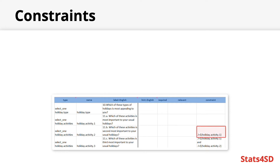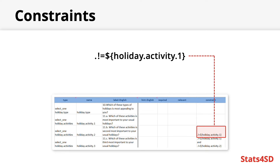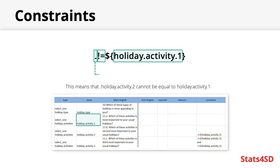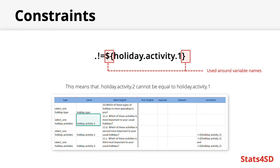Looking closely at the formula for the constraint, we have: period, exclamation mark, equals, dollar sign, open curly bracket, holiday.activity.one, close curly bracket. The name holiday.activity.one is the variable we are referring to. The exclamation mark and equals sign is an operator meaning 'not equal to'. The period means we're referring to the variable being created in this row — in other words, holiday.activity.two must not be equal to holiday.activity.one. The dollar sign and curly brackets are always used around variable names when referring to them elsewhere; ODK will not understand the constraint if this styling is not used.